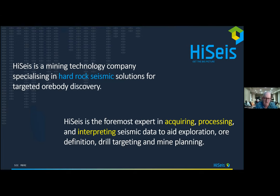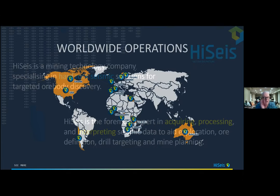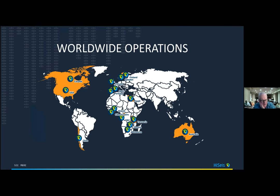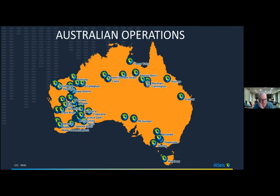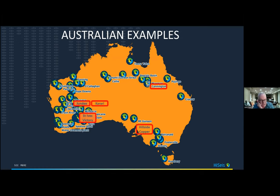Who is HiSeis? We're a niche seismic company that explores utilizing hard rock seismic. HQ is in Perth, Australia, with some people in Europe and myself on this side of the pond. We've acquired about 100 projects worldwide — in Canada, the US, South America, Africa, and Europe — but roughly 90% of them have been in Australia. I'll show examples from Australian datasets including Goldfields, Northern Star, South 32, and Rex.